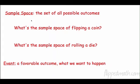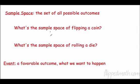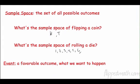Number one: sample space — that is the set of all possible outcomes. For example, if I am flipping a coin, it could land on heads or tails. That is my sample space. If I'm rolling a standard die, that means one through six — those are all the possible outcomes.